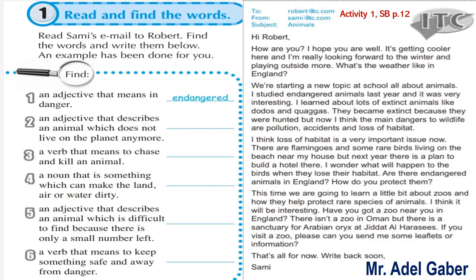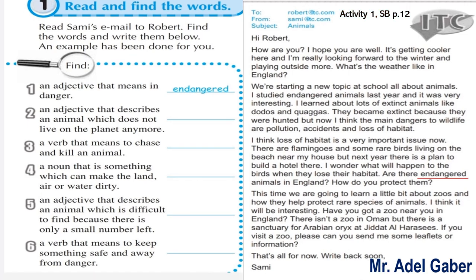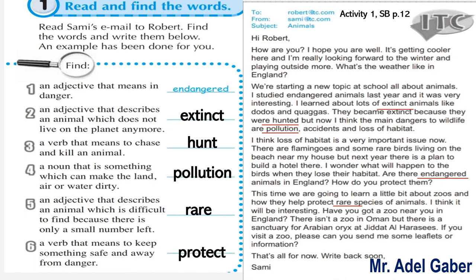Look at your skills book, page 12, activity 1: Read and find the words. Read Sam's email to Robert and find the words, then write them below. An example has been done for you — number 1 is an adjective that means in danger: it is 'endangered.' Now stop this video. You have 5 minutes to read the email and write the words in the spaces. Check your answers: number 2 — extinct; number 3 — hunt; number 4 — pollution; number 5 — rare; number 6 — protect.